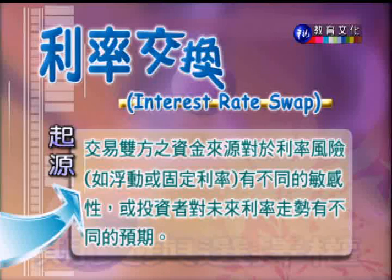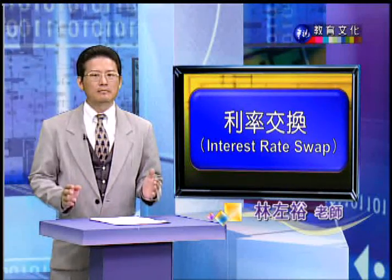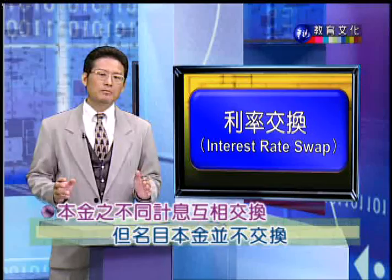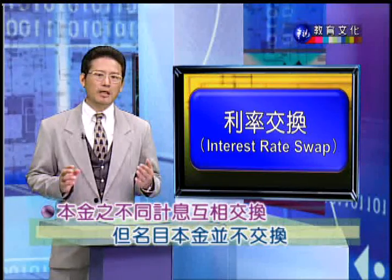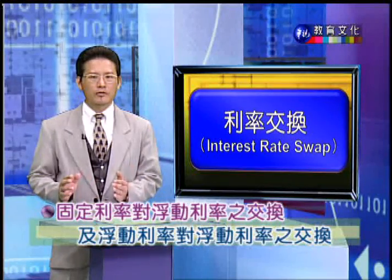利率交换起源于交易双方的资金来源，它们可能对于利率的风险——比如浮动利率或者是固定利率——有不同的敏感性，或者是投资者对于未来的利率走势有不同的预期。所以就彼此协议，就本金的不同季息来互相交换。但是明目的本金并不交换。这种利率的交换可以分成固定利率对浮动利率的交换，跟浮动利率对浮动利率的交换。